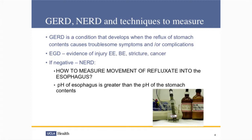Endoscopy will be able to document evidence of injury, be it eosinophilic esophagitis, Barrett's, or stricture. But if it's negative and patients still have troublesome symptoms, we call it non-erosive reflux disease. So how do you measure the movement of that reflux into the esophagus? The most important thing to remember is that the pH of the stomach is significantly lower than the pH of the esophagus. If the pH of the esophagus runs around 7 and the pH of the stomach acid content is around 4, we're able to measure how much acid truly is moving up and causing symptoms.